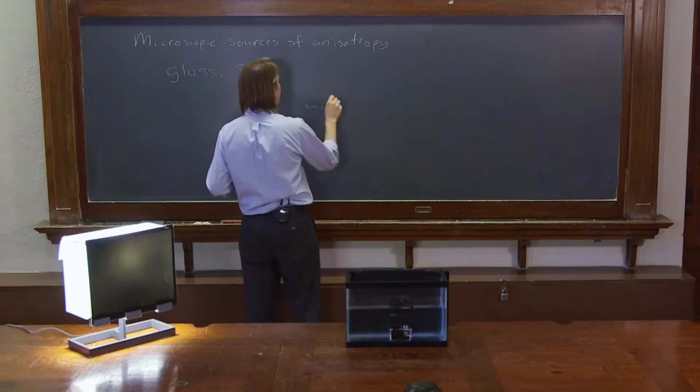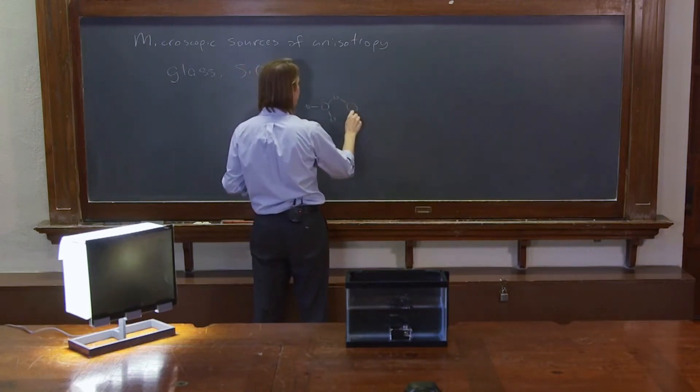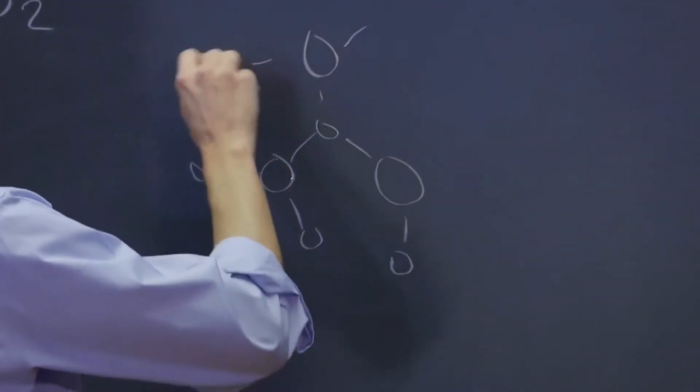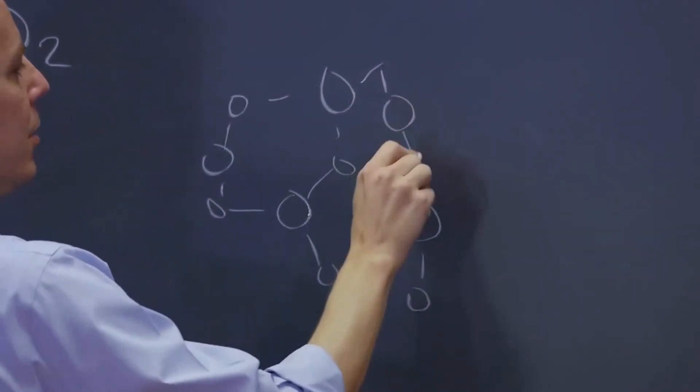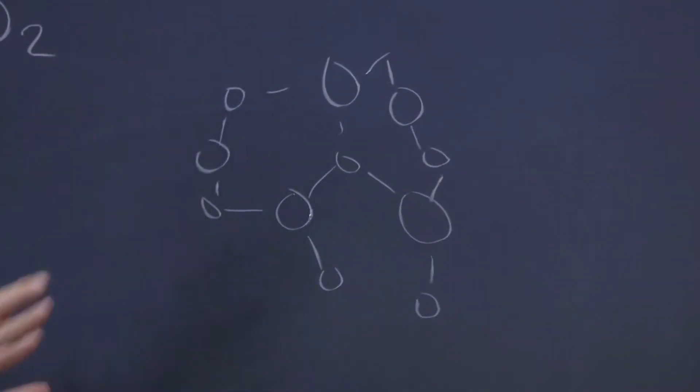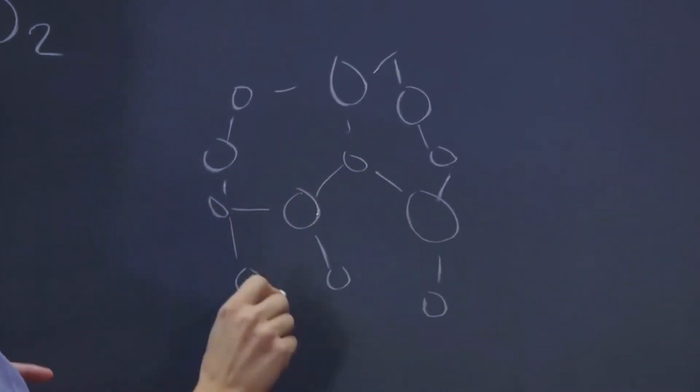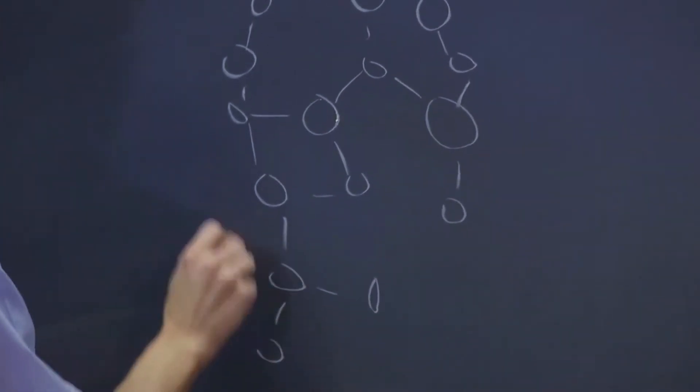You might have a silicon and a couple of three oxygens, and the fourth is off in the other plane, and another silicon, and another oxygen here, another silicon. And it might be, or it is, for glass, very amorphous. There's no order. It's just sort of a random network of Si's and O's, and it's just a big mess.